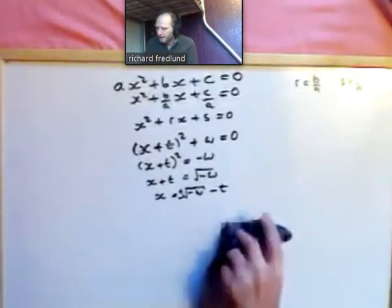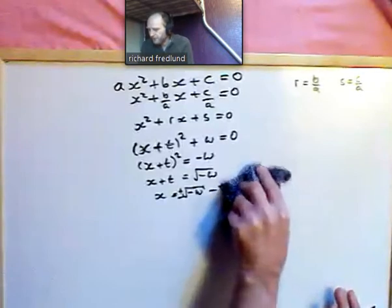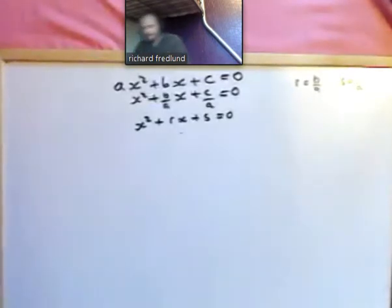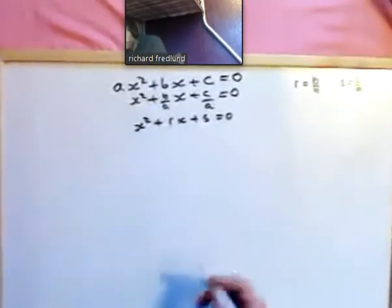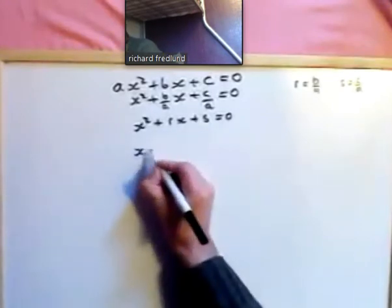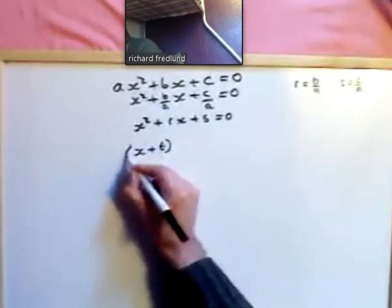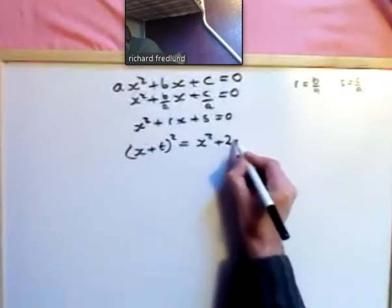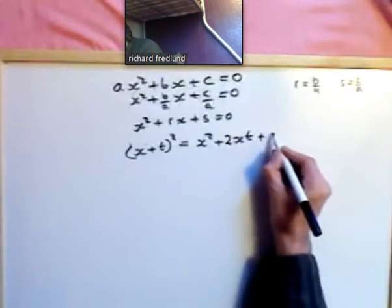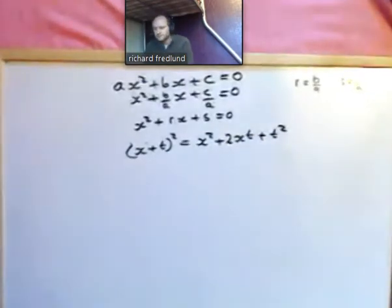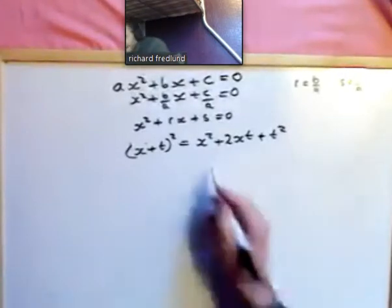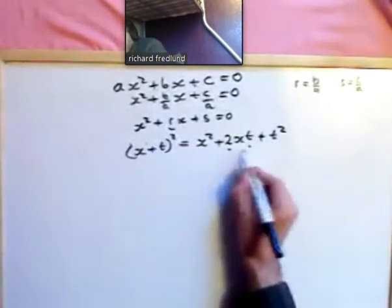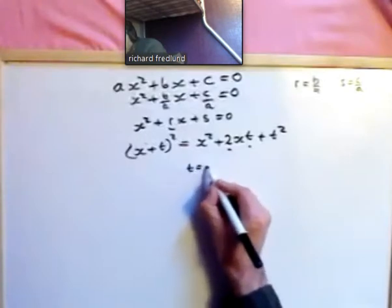So that's what we want to do. Because we can't rearrange this on its own, we want to try and find t and w which have this nice property. Let's start by looking at x plus t squared — that's x squared plus 2xt plus t squared. We can make r the same as 2t, so t is r over 2.